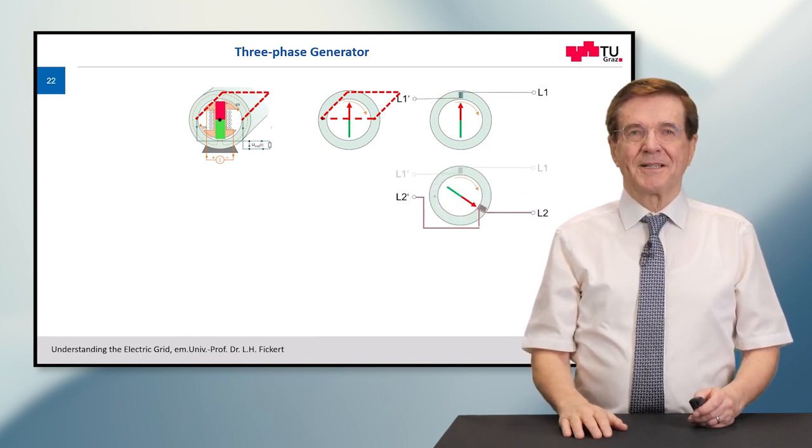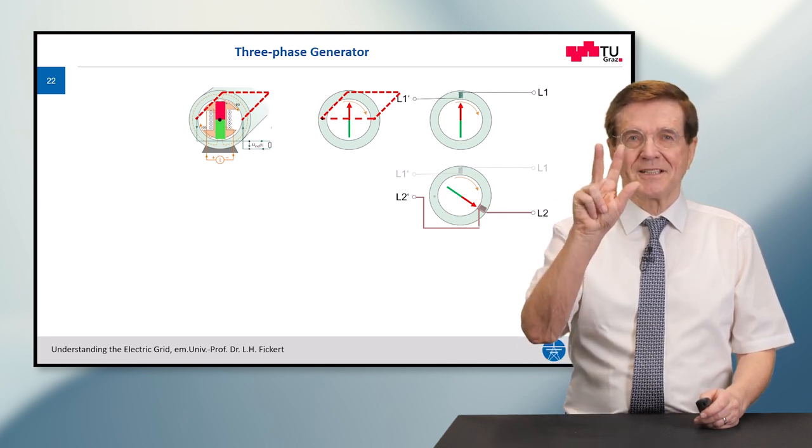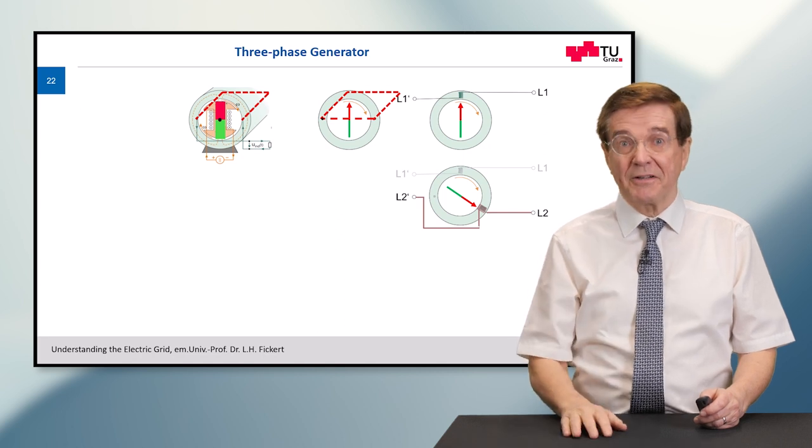Now, engineers try to become very effective, and they found out that they can make three machines in one. So, three in one that is very, very efficient.